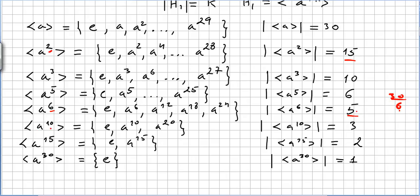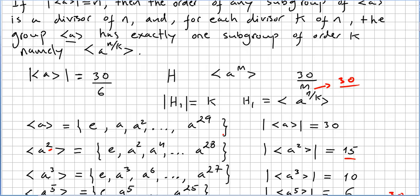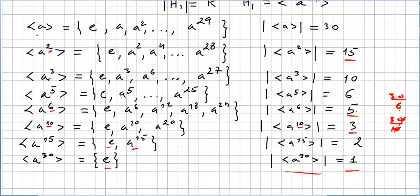A to the power of 10 has order 3, since 30 divided by 10 is 3. Generated by A to the power of 10. A to the power of 15 gives only 2 elements, order 2. And A to the power of 30 will be the identity, a group of order 1. So with the order of the group being 30, you have here all the subgroups.